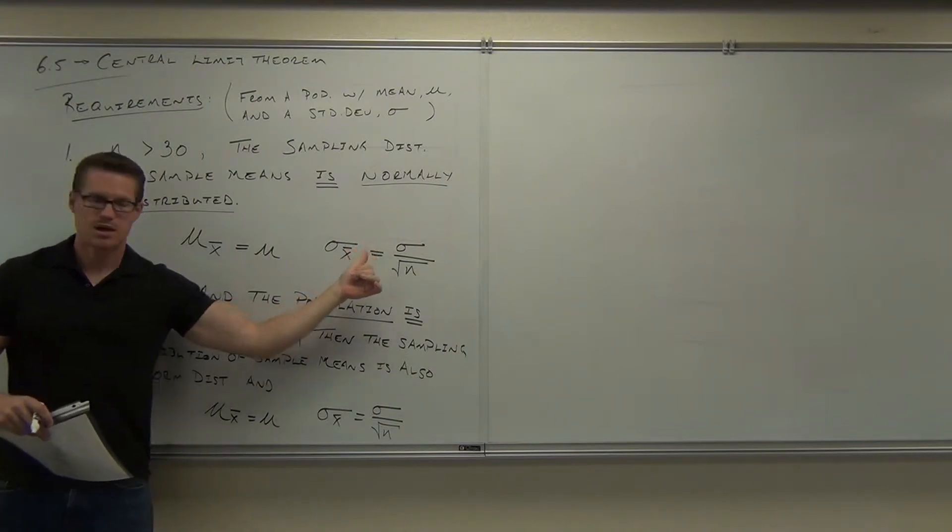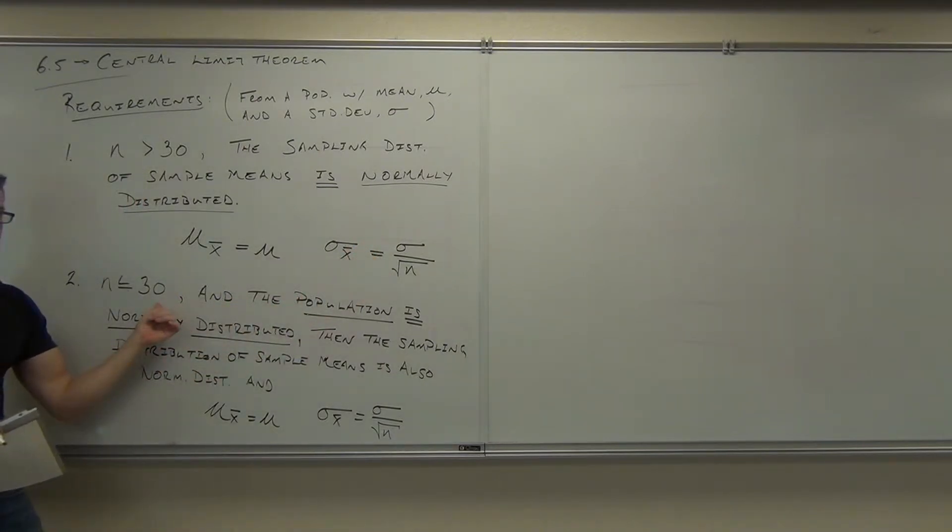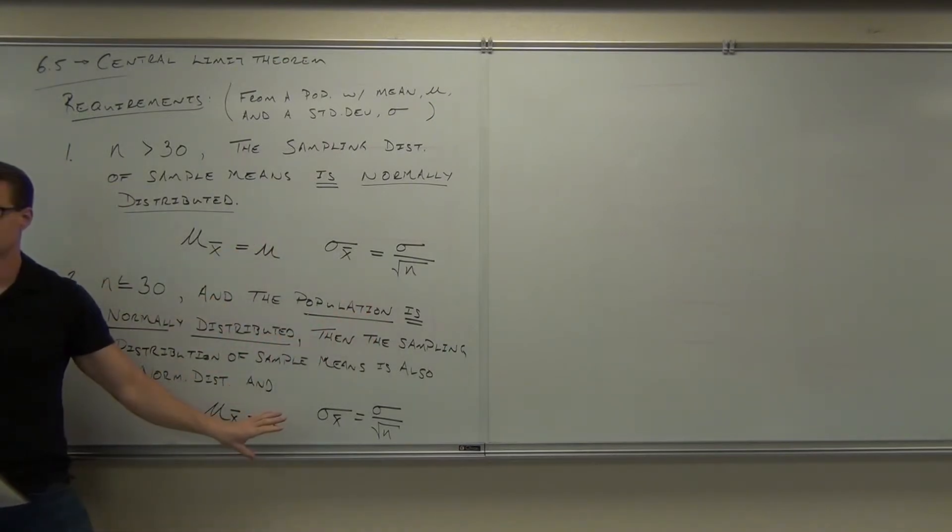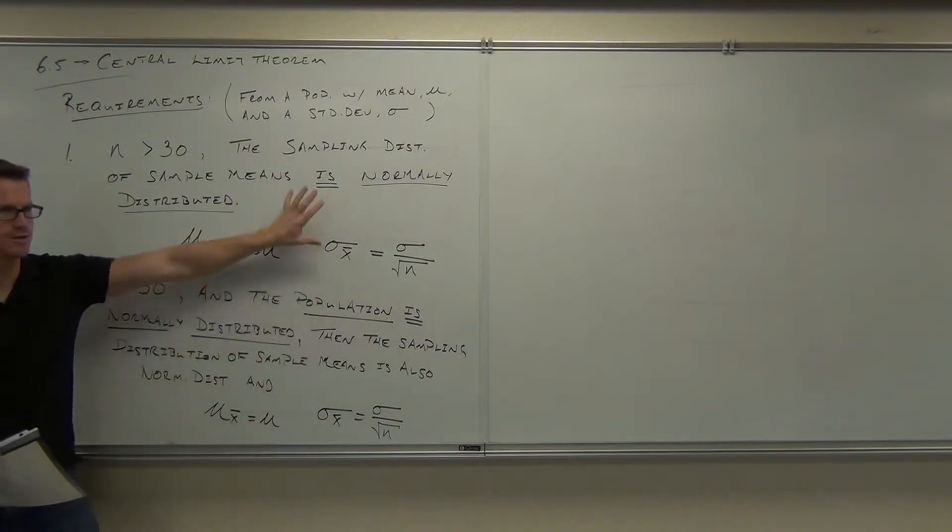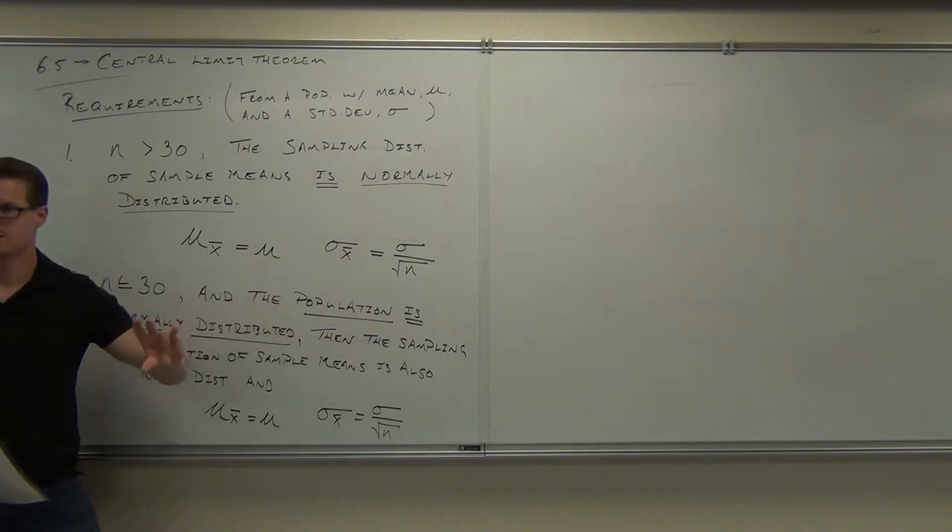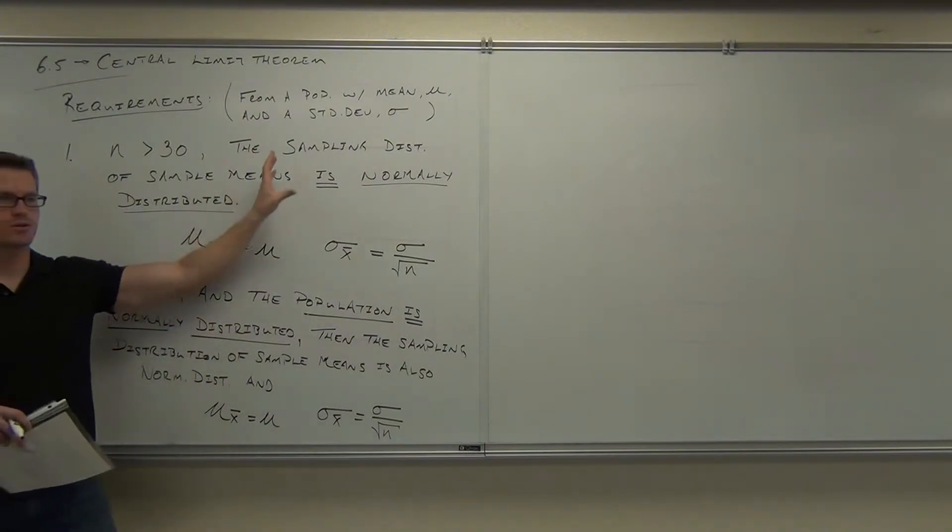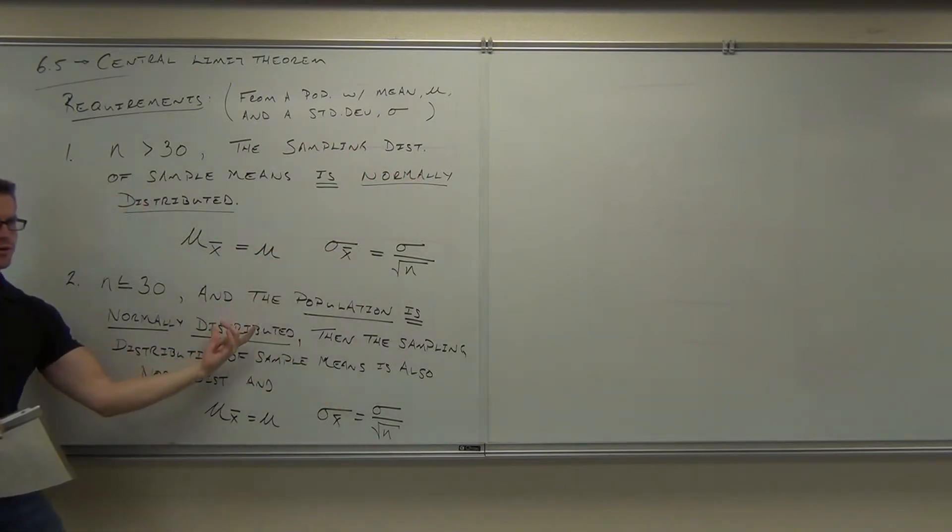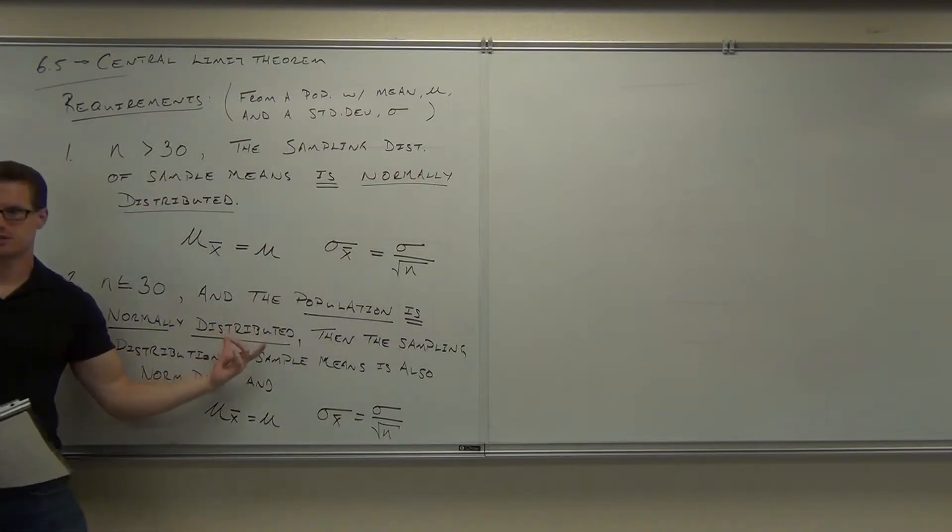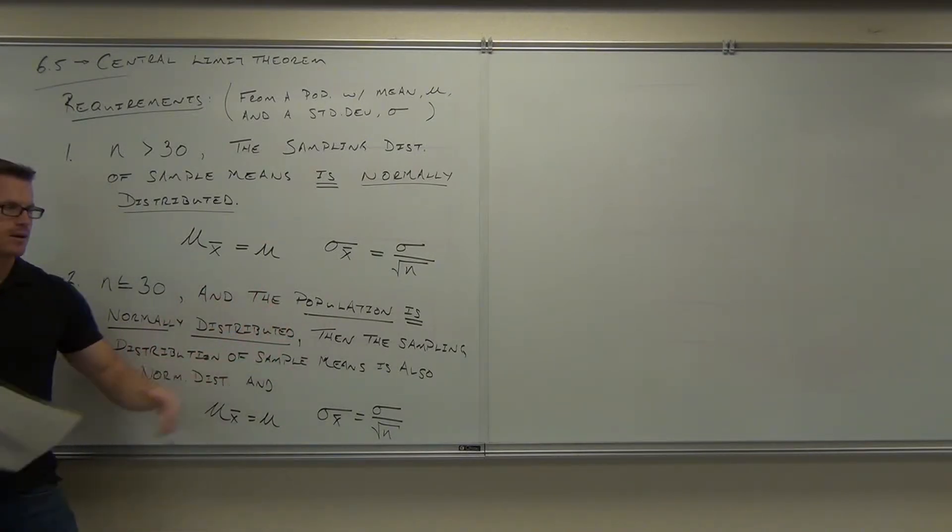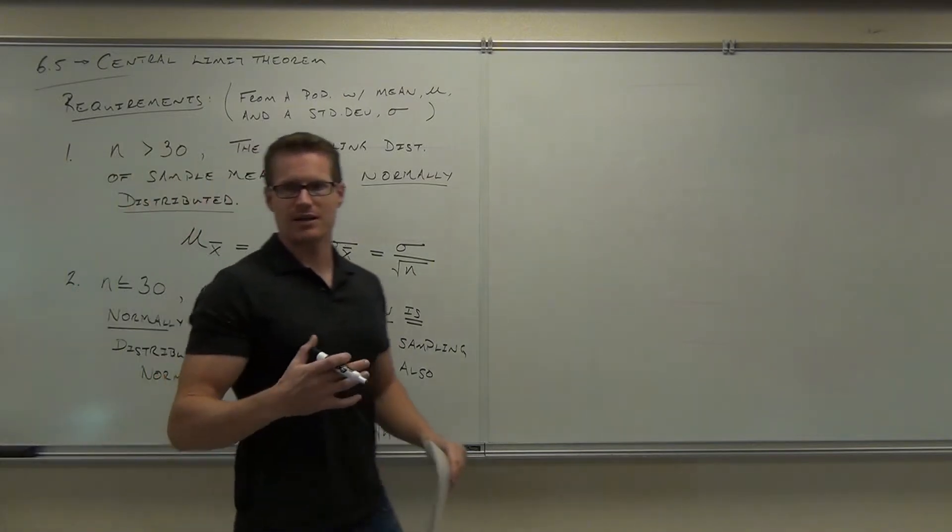If n's less than or equal to 30, you have to be reading. If it says population is normally distributed, can you do this stuff? Yes. No problem. Then everything works. Same exact stuff. Nothing's going to change here whether you have a sample size bigger than 30 or less than 30. The difference is if it's bigger than 30, everything works no matter what. If it's less than or equal to 30, it does matter what the population looks like. It's got to be normally distributed for this stuff to work.